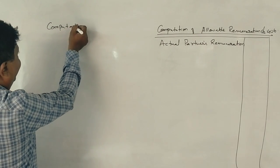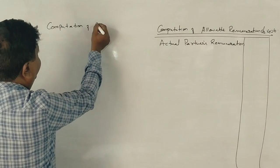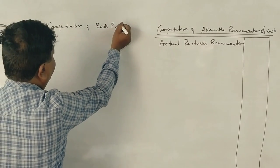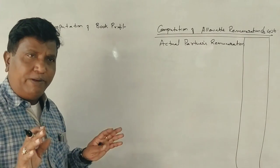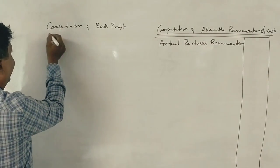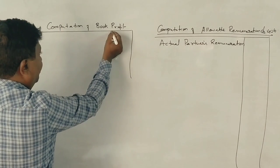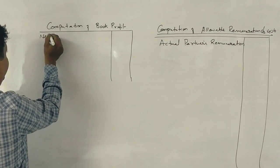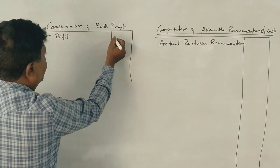First, we calculate the book profit. Computation of book profit — what is the allowable remuneration? We start with net profit. Net profit is ₹1,35,000.